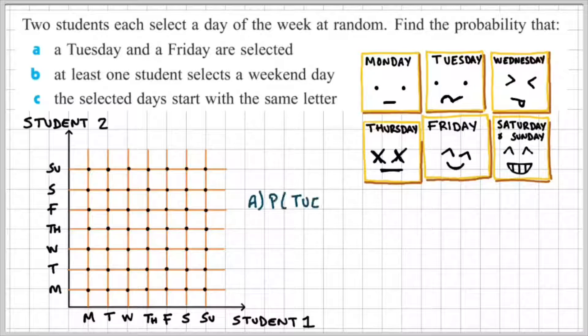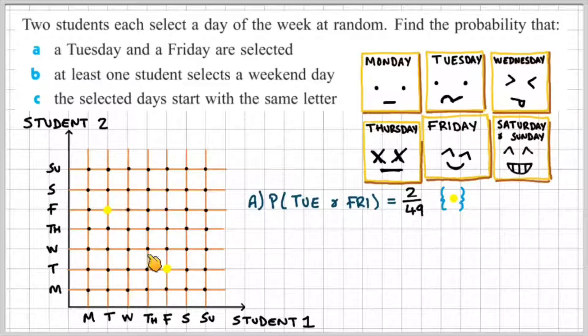Okay, so let's find the probability of getting a Tuesday and Friday. So Student 1 could select a Tuesday and Student 2 could select a Friday, that's that point there. And then Student 1 could select a Friday and Student 2 could select a Tuesday, so that would be that point there. So 2 over 49, indicated by our yellow dot on our two-dimensional grid.